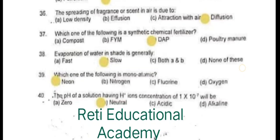Question number 37: The synthetic chemical fertilizer among the following is DAP. Question number 38: Evaporation of water shade is generally slope. Question number 39: Among the following, the monoatomic element is Neon.